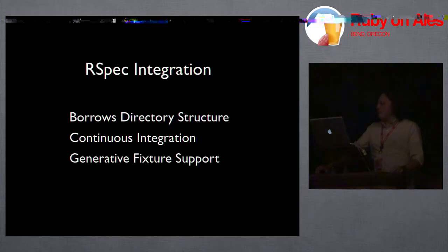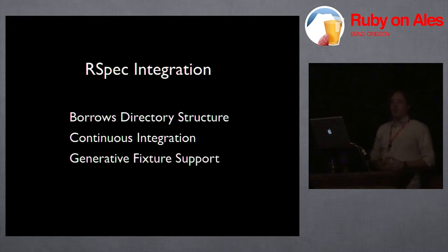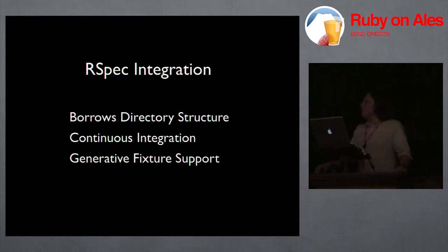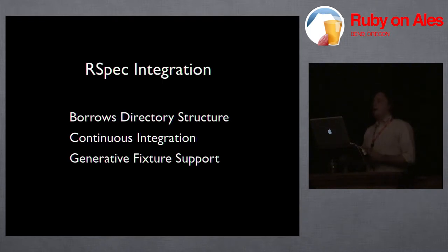The RSpec integration is very tight. If you're already using RSpec and have a spec directory, Jasmine is going to drop a JavaScript directory into your spec directory — that's where all your Jasmine specs go. If you're using something like Hudson or Cruise Control for continuous integration, Jasmine is out of the box ready to plug into that as well, along with your Cucumber tests and RSpec tests. Also, when working with Jasmine you often need to load in some fixture data — not from the database, but fixture markup that you pull into your code, run behavior on, and verify expectations.